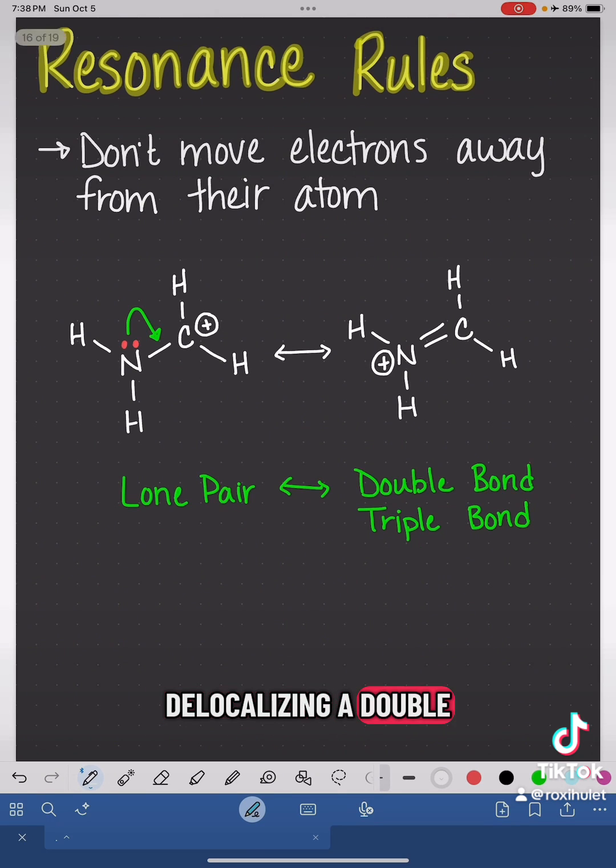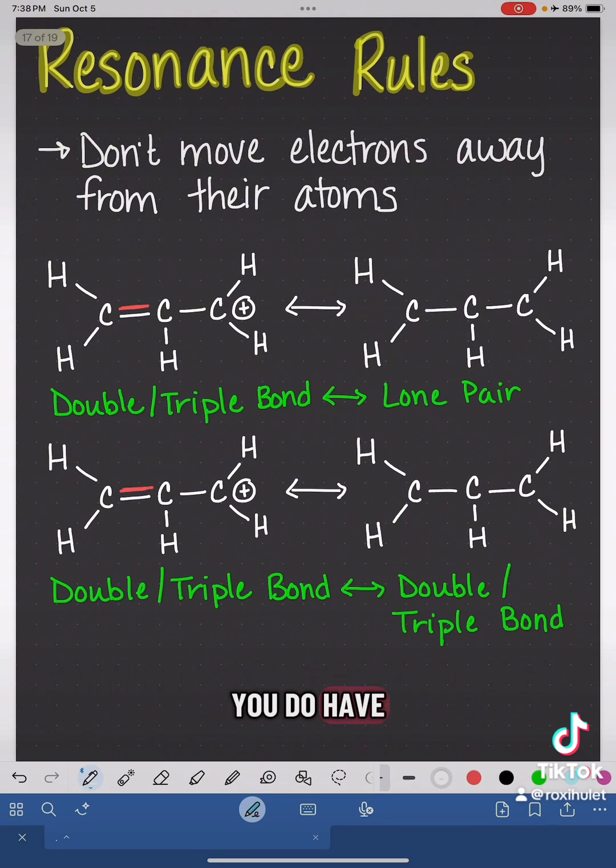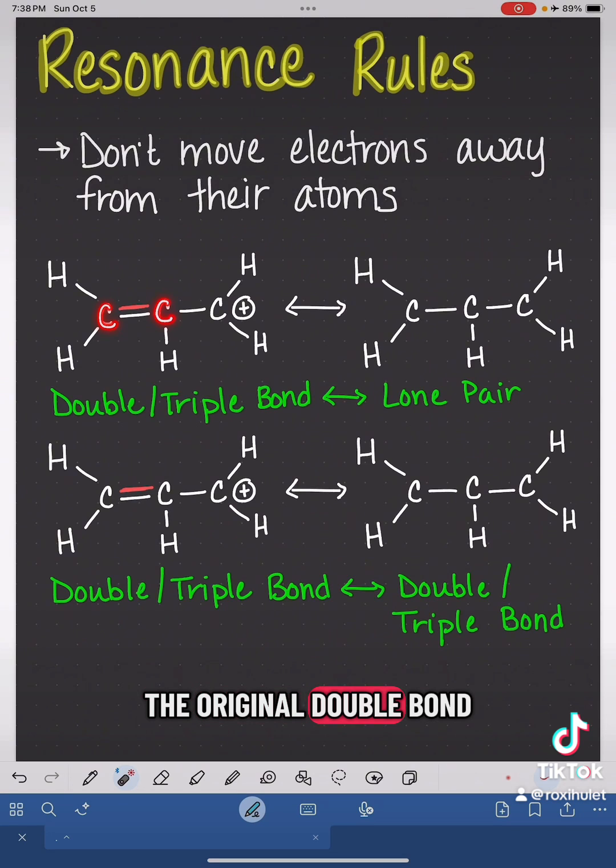Now if you're delocalizing a double bond or a triple bond, you do have a couple of options. One option is to convert the double or triple bond into a lone pair that is on one of the two atoms of the original double bond.